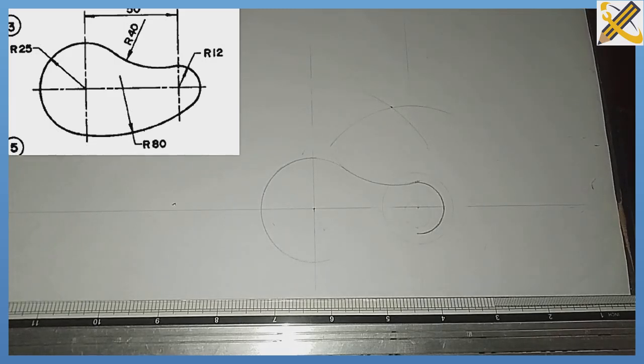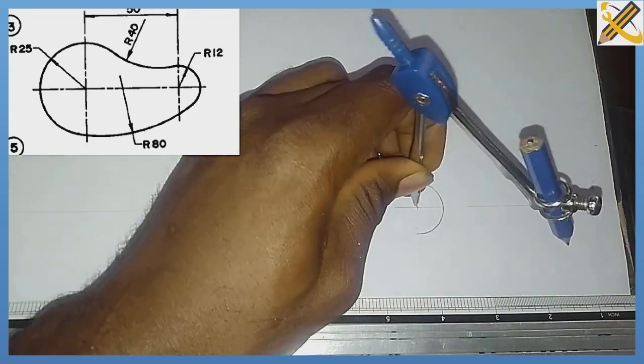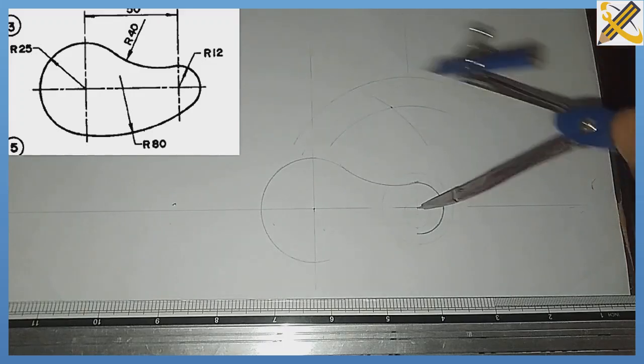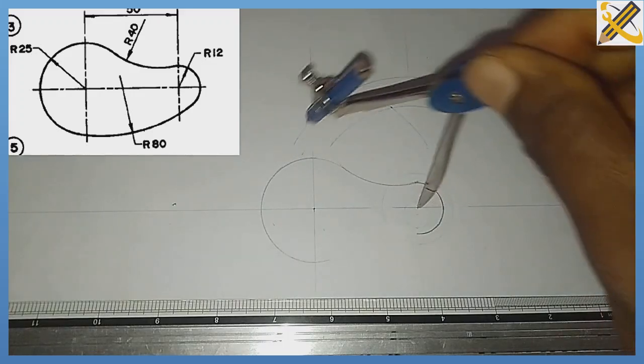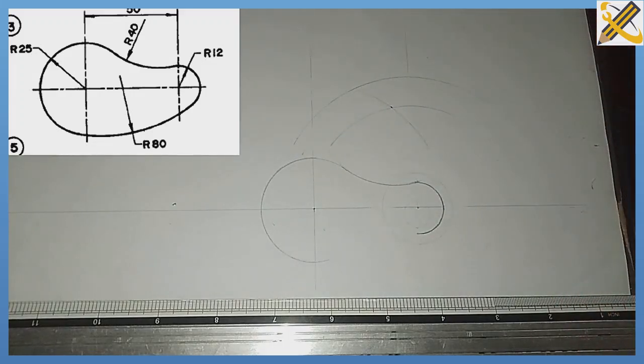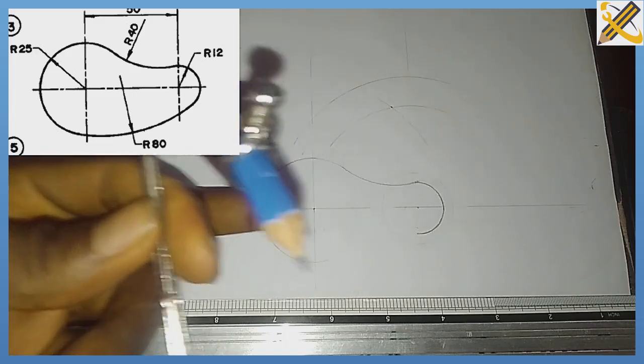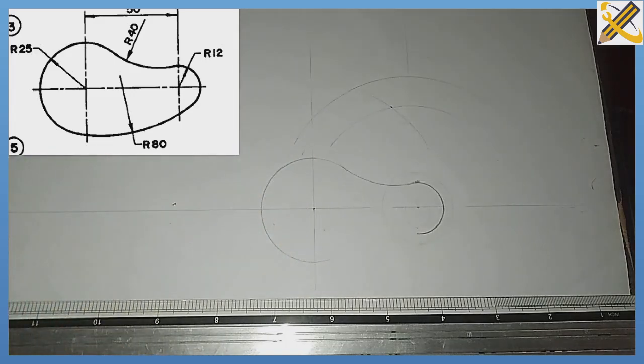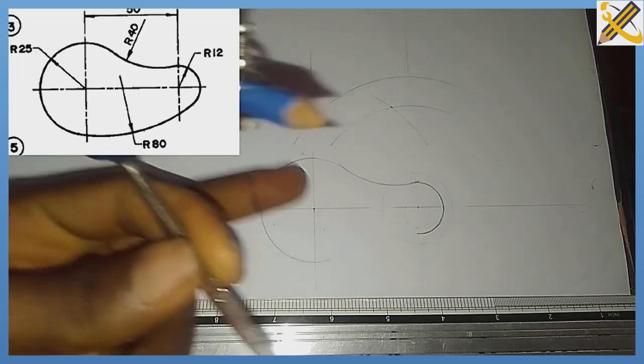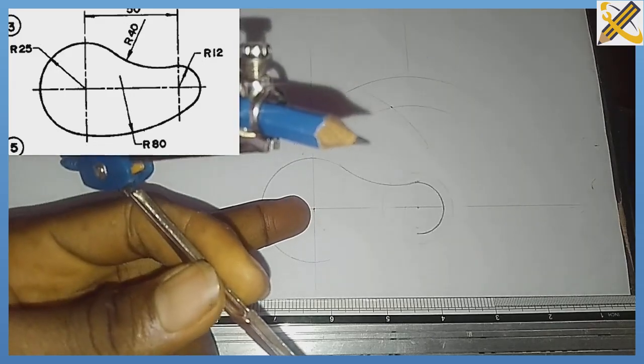After measuring 68, place it at the center of radius 12 and strike an arc towards the top. Then that same 80 minus the radius of the circle, which is 25—80 minus 25 is 55. Pick your compass, measure 55, and also strike an arc with this center.